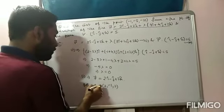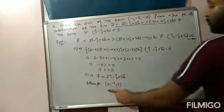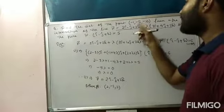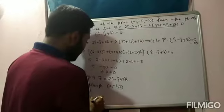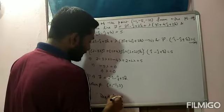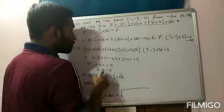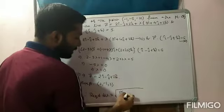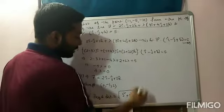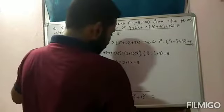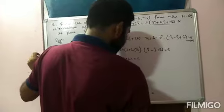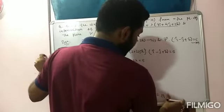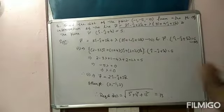Putting λ = 0 in equation 1: R̄ = 2î − ĵ + 2k̂ + 0 = 2î − ĵ + 2k̂. This is the point of intersection between the line and the plane. Converting from vector form to coordinate form: the point of intersection is (2, −1, 2). So X₂ = 2, Y₂ = −1, Z₂ = 2. The required distance = √[(2−(−1))² + (−1−(−5))² + (2−(−10))²] = √[9 + 16 + 144] = √169 = 13 units.